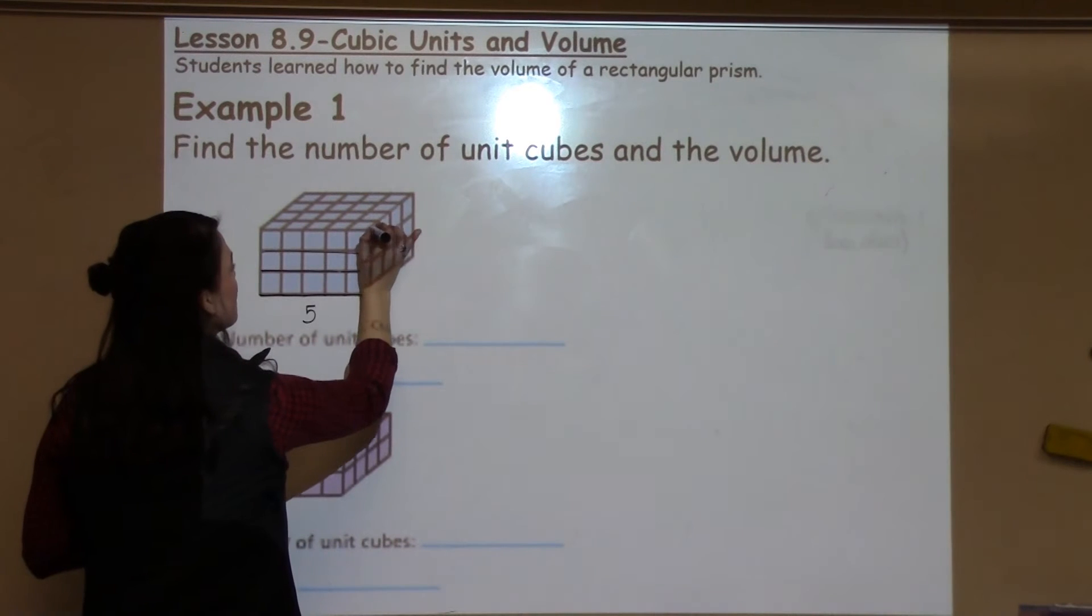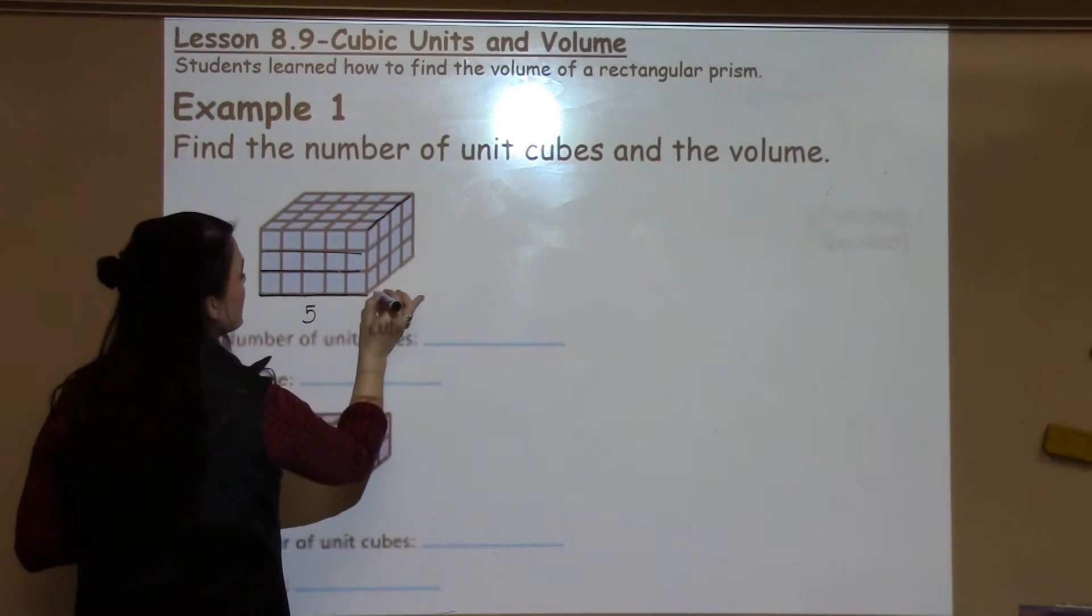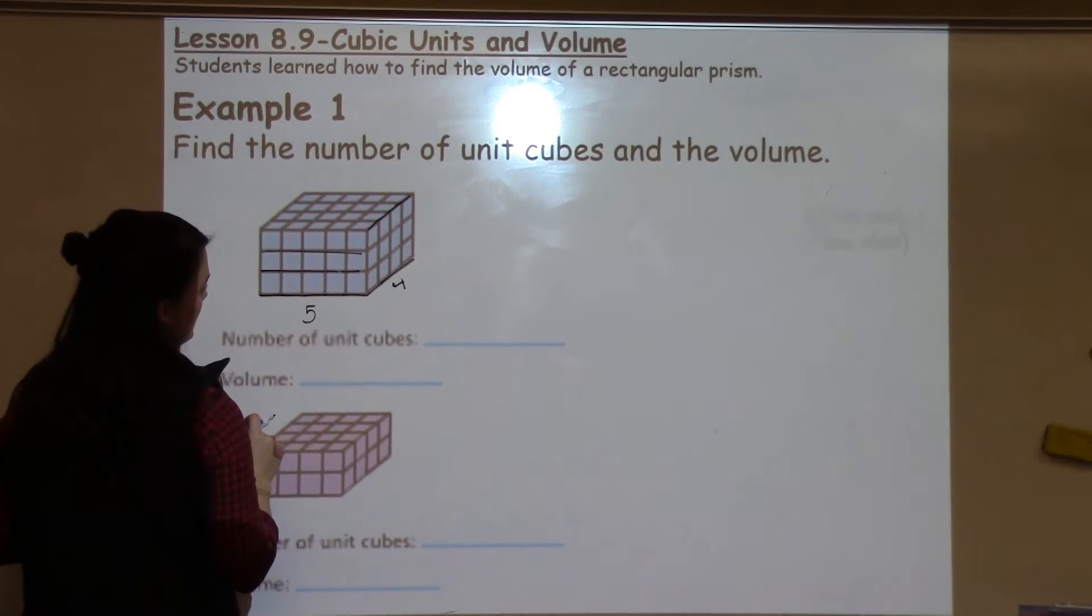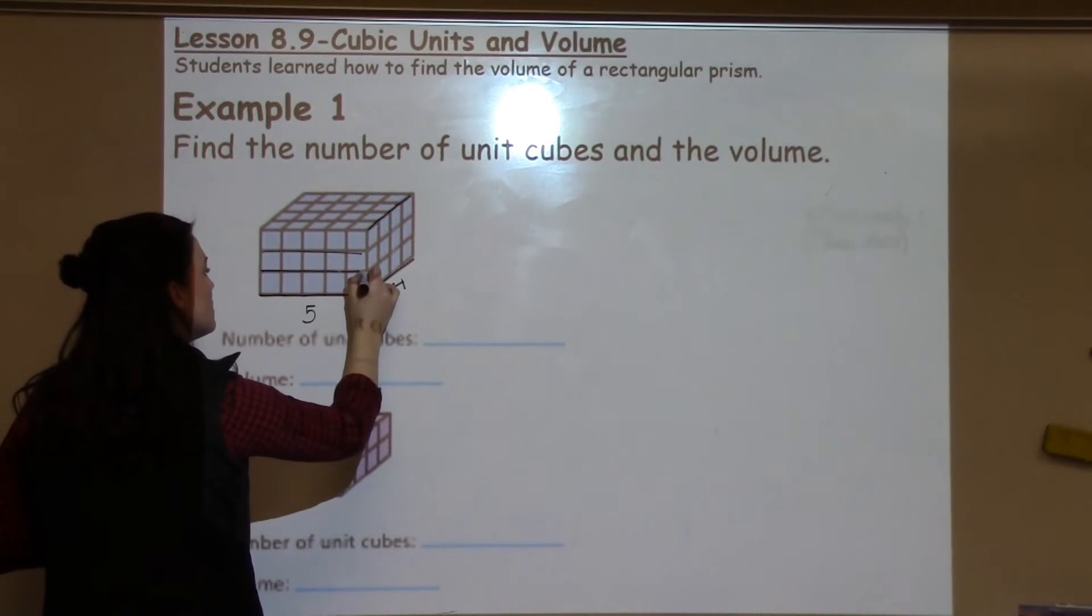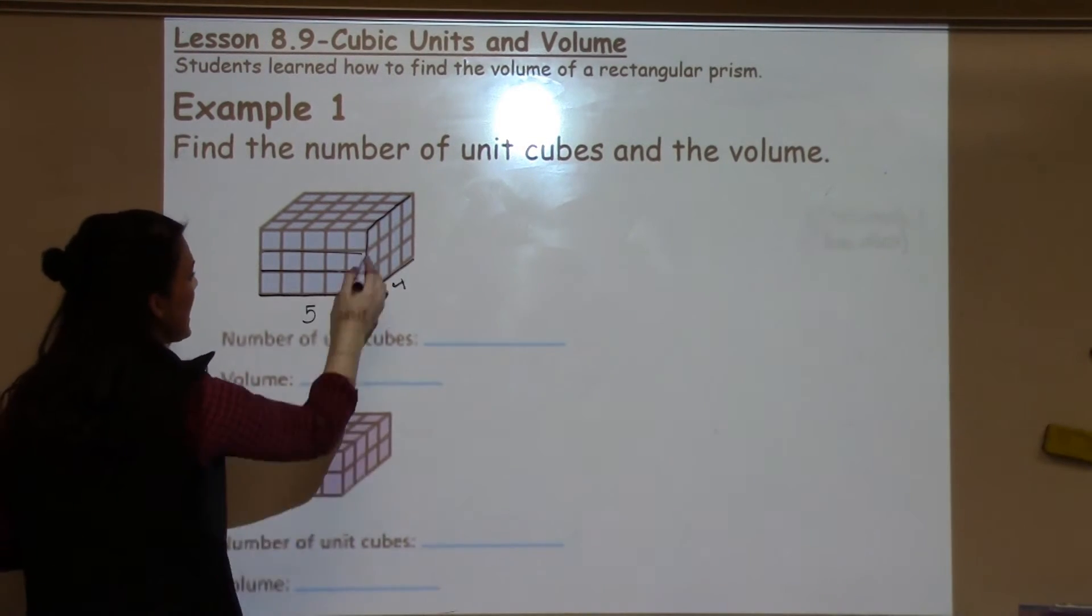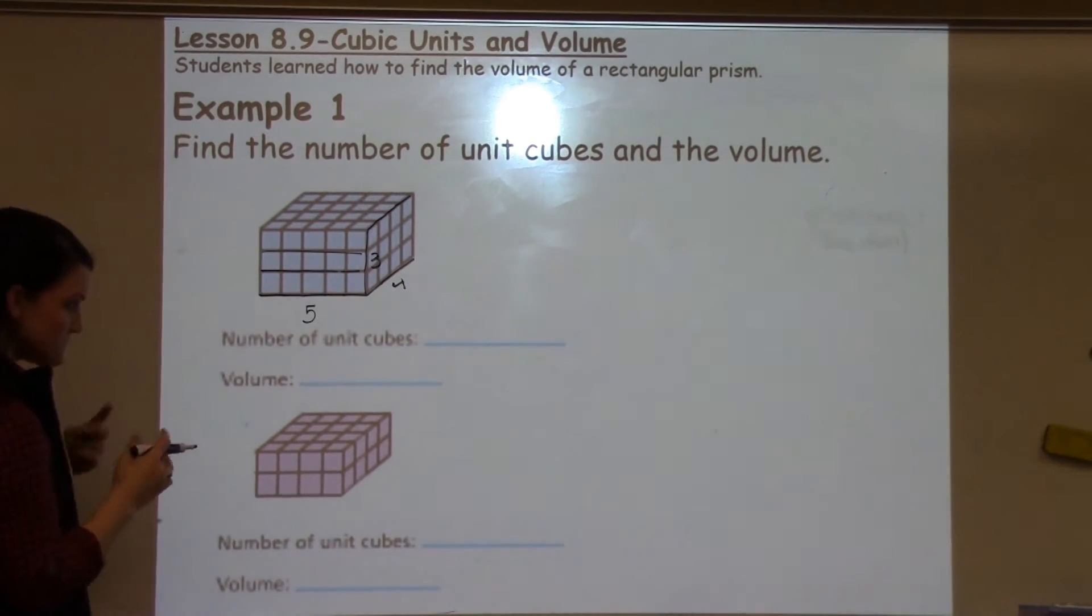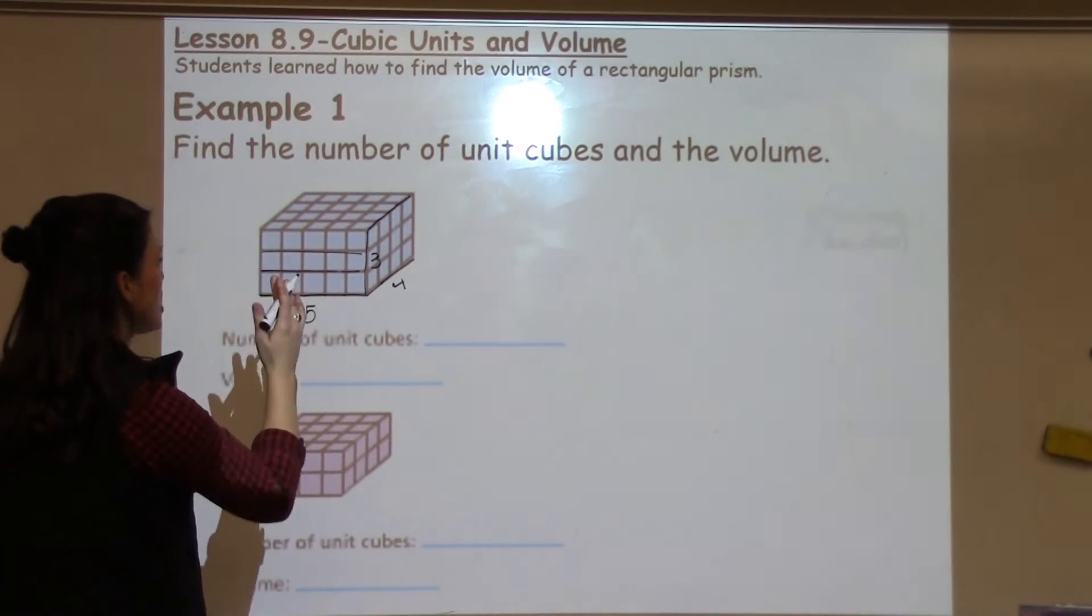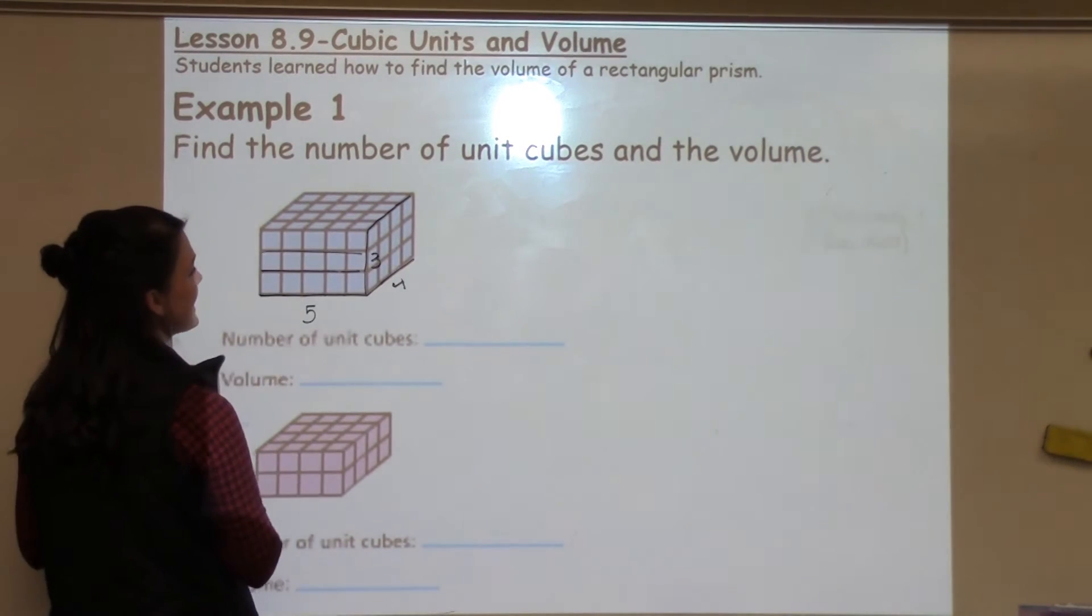Which means that I've got 1, 2, 3, 4 going back. Alright? 4 going back in every single layer. And then I also have 1, 2, 3 going up, which is going to help me when I'm thinking about the third dimension height. I've got to know how tall it is, how many total layers I have.